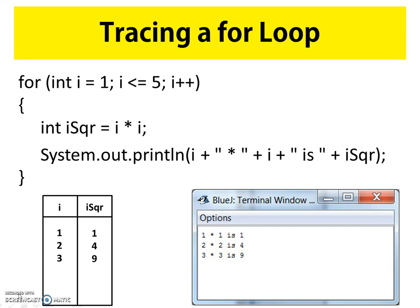i is incremented to four. We test the condition statement: four is less than or equal to five — true. We go into the code block and evaluate iSquare where i is four: four times four is 16. In our t-chart, where i is four, iSquare is 16. The print statement outputs 'four times four is 16.' We reach the end of the code block and increment i from four to five.